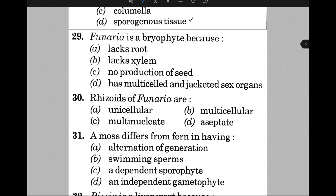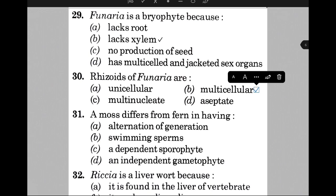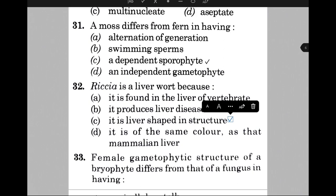Funaria is a bryophyte because — the answer is option B, that is it lacks xylem. Rhizoids of Funaria are — the answer is option B, that is multicellular. A moss differs from a fern in having — the answer is option C, that is a dominant sporophyte. Riccia is a liverwort because — the answer is option C, that is it is liver-shaped in structure.